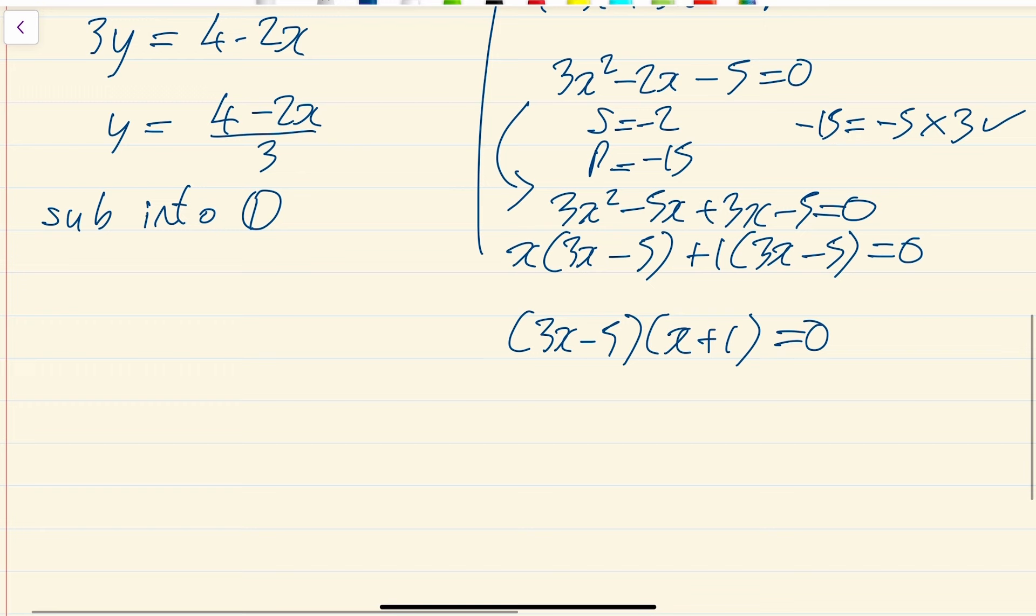And then you're in this lovely position of mathematics where you've got a times b equals 0. So that happens when either 3x minus 5 equals 0, or x plus 1 is equal to 0. So here, 3x is equal to 5, x is equal to 5 over 3. And over here, x is equal to minus 1.